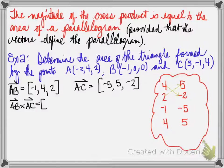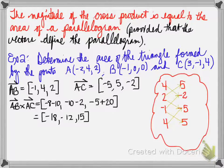So four times negative two, minus two times five, so you get negative eight minus ten. And then the second one, two times negative five, negative one times negative two, you get negative ten minus two. And the last one, negative one times five, minus four times negative five, which is going to be negative five plus twenty. You find out that the result of the cross product is negative eighteen, negative twelve, and fifteen.